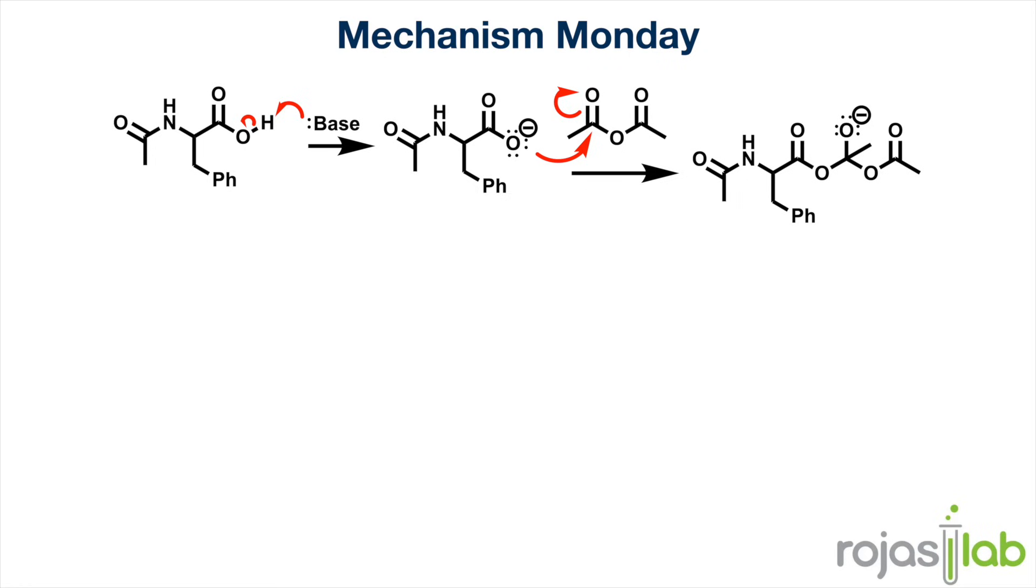In the next step, those electrons that we kicked up previously will come back down to reform our carbonyl carbon and also kick off the good leaving group in the form of acetate. This also regenerates another anhydride functional group on our molecule.